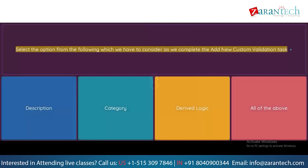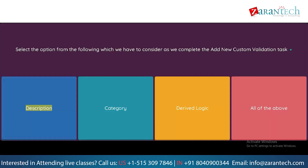Question: Select the option from the following which we have to consider as we complete the Add New Custom Validation task. Option 1: Description. Option 2: Category. Option 3: Derived Logic. Option 4: All of the above.